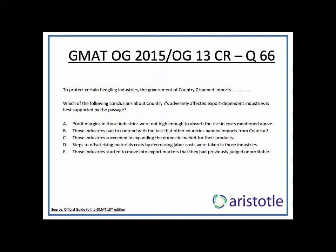We can never predict an inference so I'll go to the options immediately. Option A says: profit margins in those industries were not high enough to absorb the rise in costs mentioned above. That doesn't look like a bad option. The point is that the ability of these companies to compete went down because they couldn't absorb the cost. Had they absorbed the cost, their competitive ability would have remained unchanged, but they apparently couldn't. So A could be a decent inference.